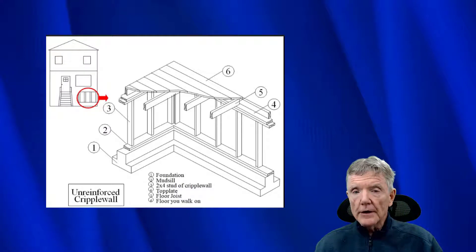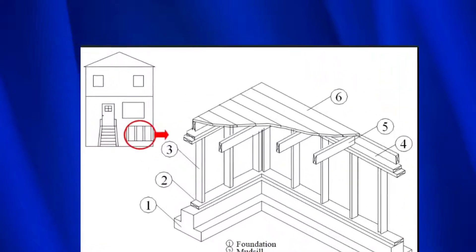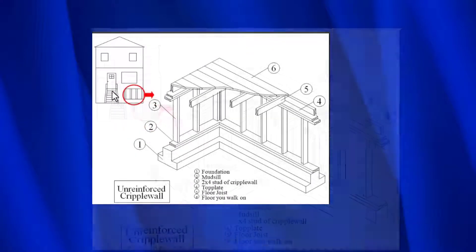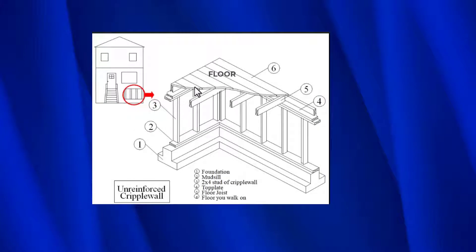In this 10-minute video we're going to be looking at the seismic retrofit of homes with cripple walls. A cripple wall is just like what you see right here — this is the foundation of the house, this is the wall called a cripple wall, and then this right here is the floor that you walk around on. A good way to find out if you have cripple walls is if you have more than two or three steps leading into the front door. Here's a blown-up view of a cripple wall: this is the floor you walk on, this is the cripple wall itself, this is what's called the mud sill, and then this is the foundation.